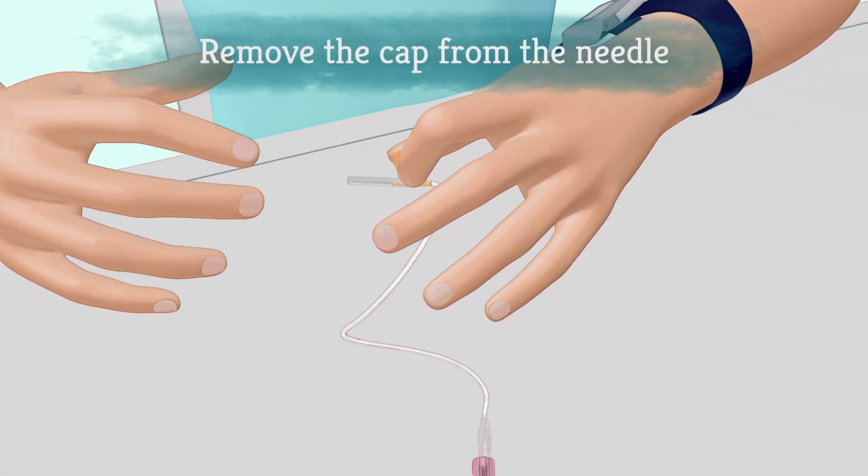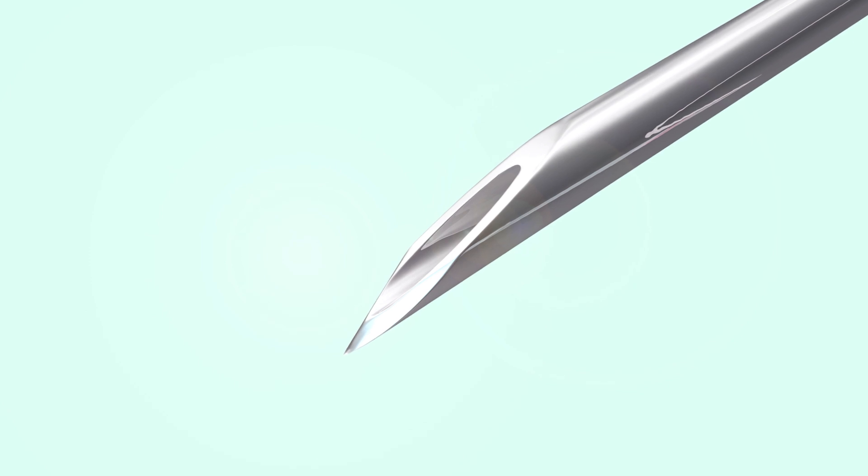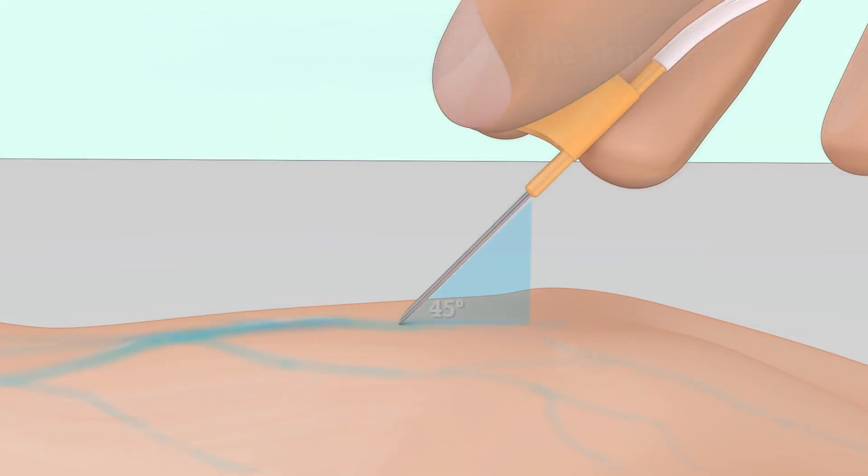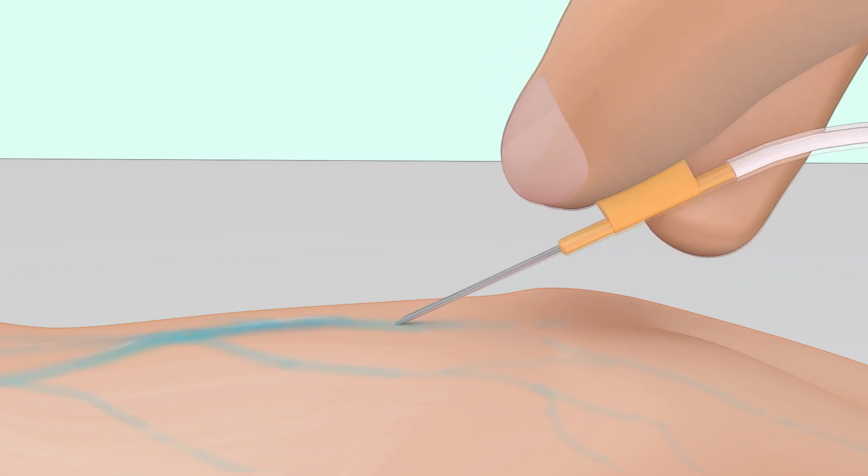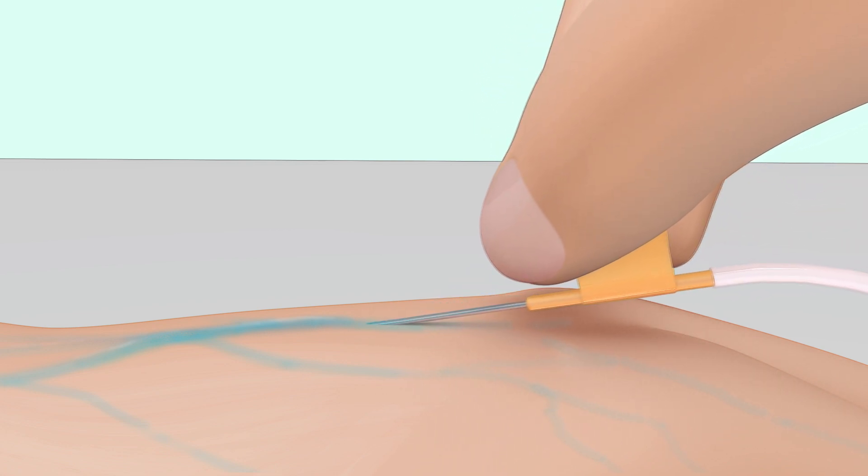Remove the cap from the butterfly needle and hold the wings between your thumb and first finger, with the hole facing up and the sharp end facing down. With a confident push, stick the needle into the skin at about a 45 degree angle. The needle should point toward your heart as it enters and follow the direction of the vein under the skin.